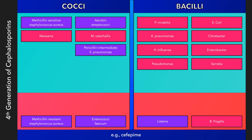Fourth generation cephalosporins have a similar spectrum of activity as third generation cephalosporins, but with greater activity against beta-lactamase producing gram-negative bacteria. Cefepime gains activity against pseudomonas but has diminished activity against staphylococcal species. The pseudomonal coverage is a defining feature of this generation. It is a very strong antibiotic with a wide spectrum of activity, usually reserved for in-hospital patients with severe infections when there is suspicion of a multi-drug resistant organism. This antibiotic can also cross the blood-brain barrier and can be effective in the treatment of CNS infections. Anaerobic activity is very limited.